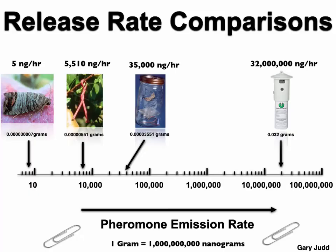Let's look at release rate comparisons on a logarithmic scale from 10 to 100 million nanograms. A female releases five nanograms per hour — at the bottom of the scale. A hand-applied dispenser releases roughly 1,000 times more: about 5,000–5,500 nanograms per hour. Gary's mason jar experiment determined that 35,000 nanograms per hour was needed to shut down codling moth responses to pheromone. And an aerosol pheromone emitter releases approximately 32 million nanograms per hour.